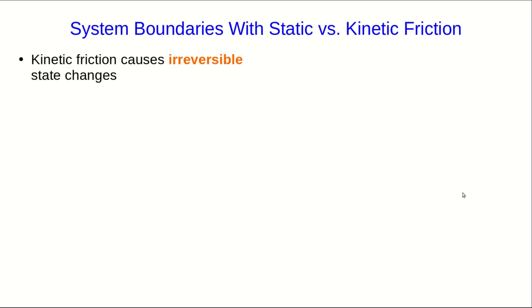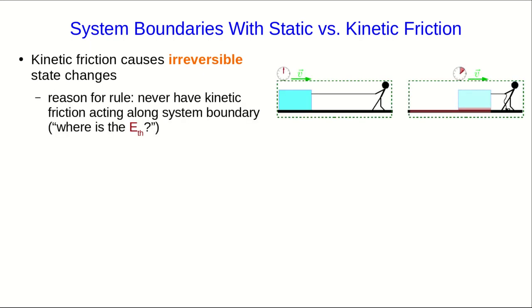Static friction is in one way simpler, and in another way quite a bit more complicated. Let me just remind you, kinetic friction causes irreversible state changes, and so that means it produces thermal energy. And that's our reason for the rule that we should never have kinetic friction acting along the system boundary. We have this question of where the thermal energy ends up. We want it to end up in our system, all in our system, to make our energy accounting easier.